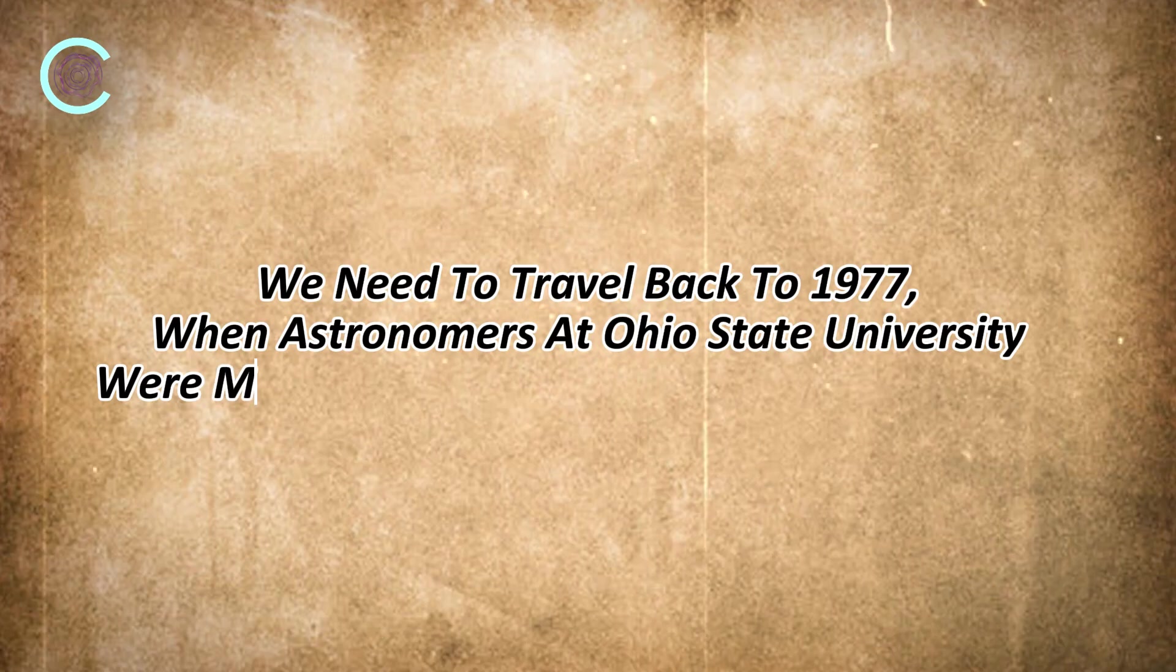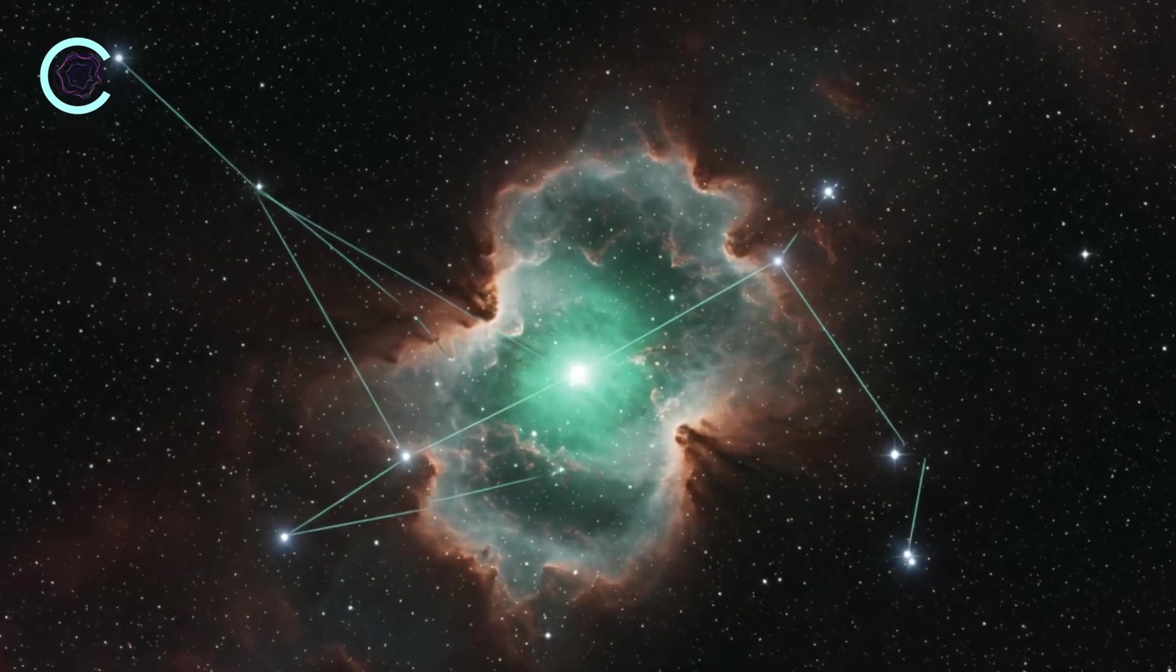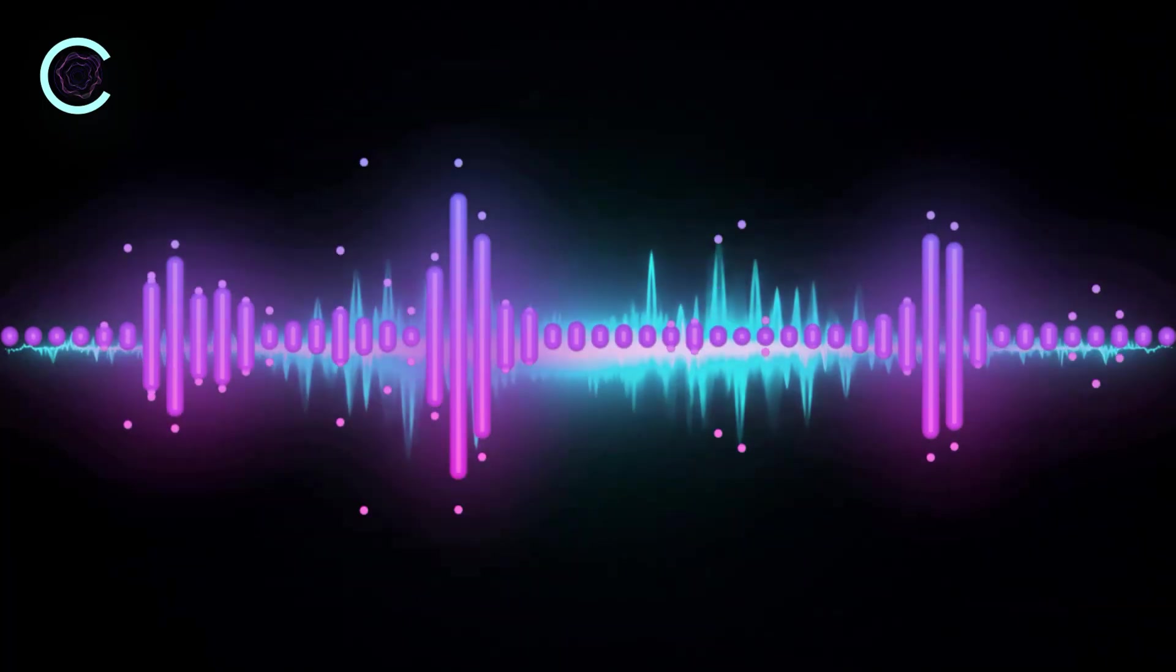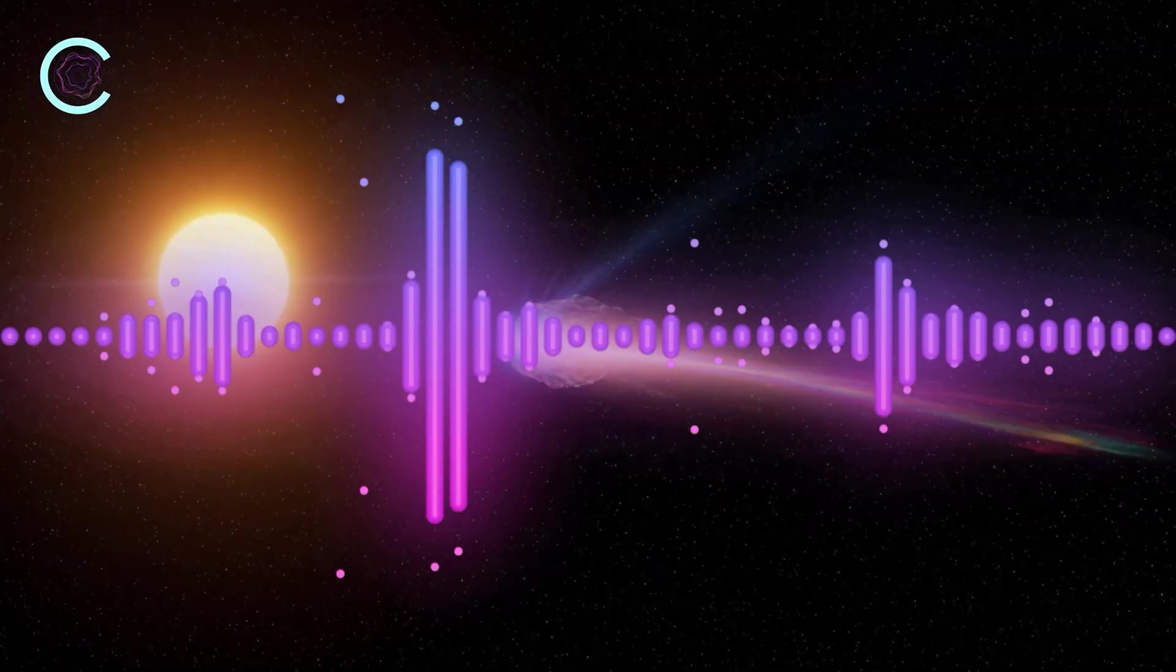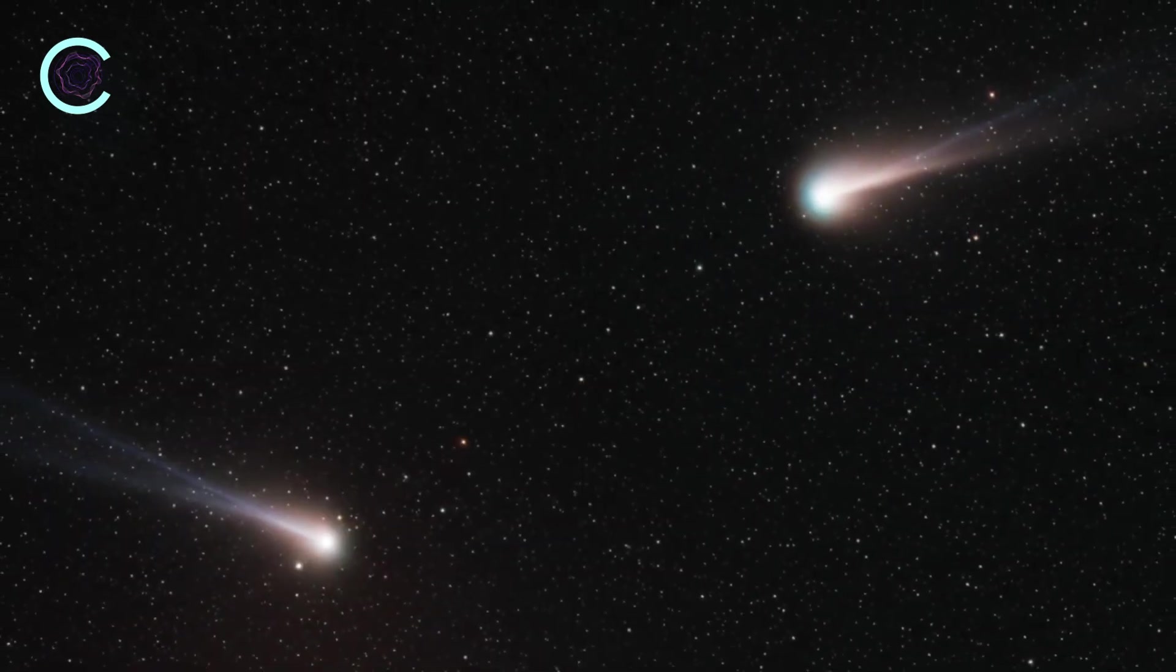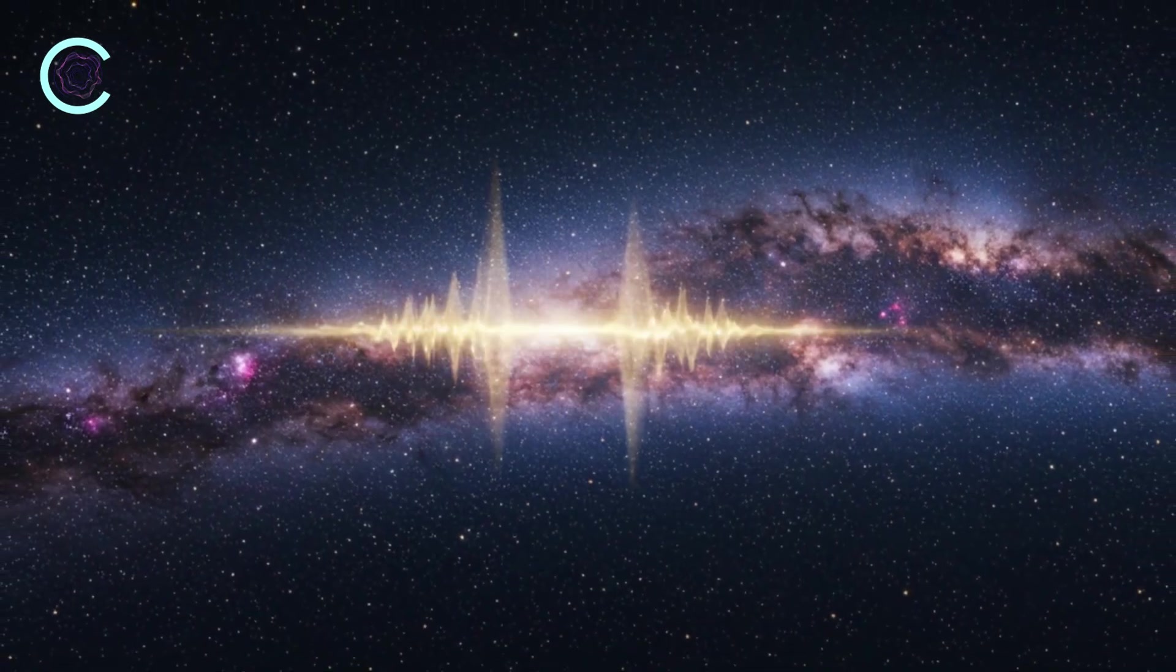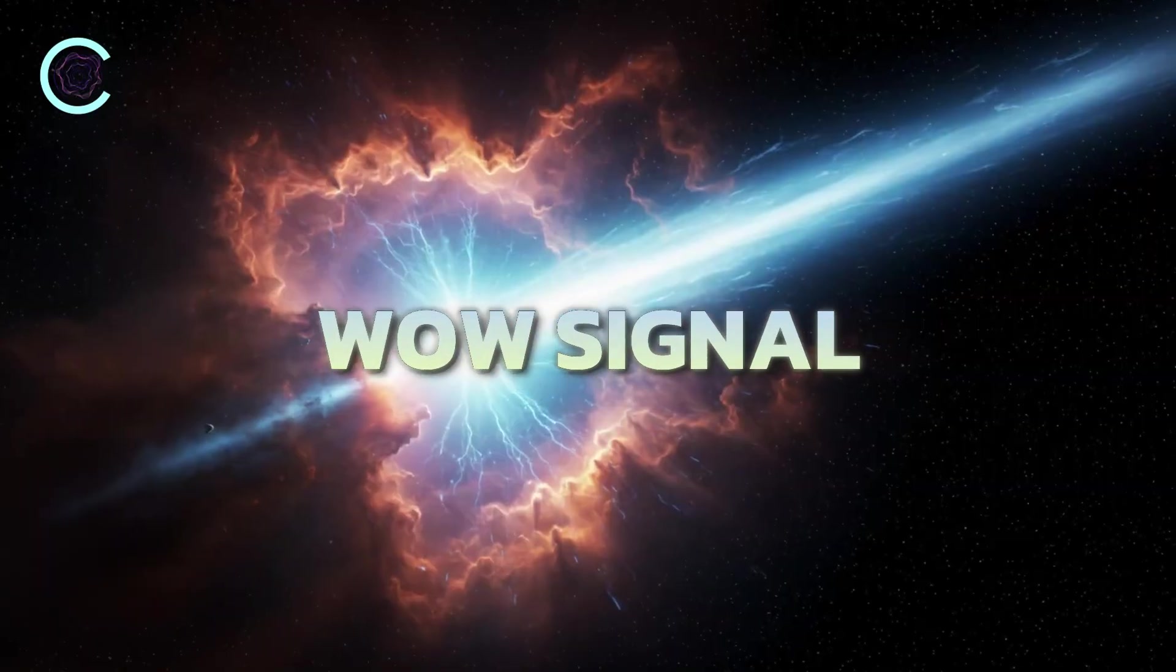To connect this final piece, we need to travel back to 1977, when astronomers at Ohio State University were monitoring deep space for unusual signals. On one summer night, their receiver detected a powerful narrowband radio transmission coming from the direction of the constellation Sagittarius. The signal lasted 72 seconds. It came through at a frequency of 1420 megahertz, which just happens to be the natural emission frequency of neutral hydrogen, the most important and most abundant element in the universe. If an intelligent species wanted to send out a universal hello across the galaxy, 1420 megahertz is exactly where they'd broadcast. When the astronomer on duty saw the unusual spike in the data printout, he circled it and wrote one word in the margin — WOW. This became known as the WOW signal, and no one has ever been able to explain it.